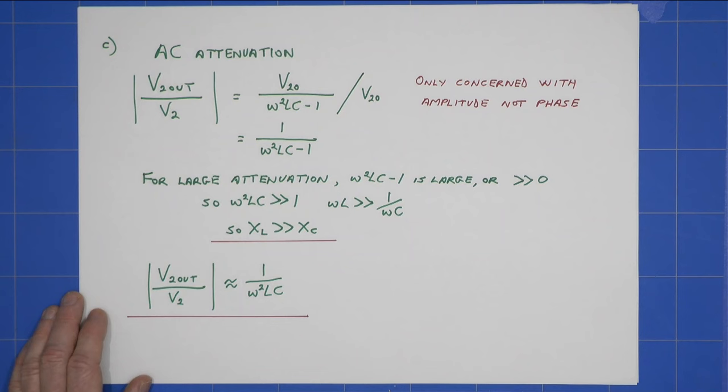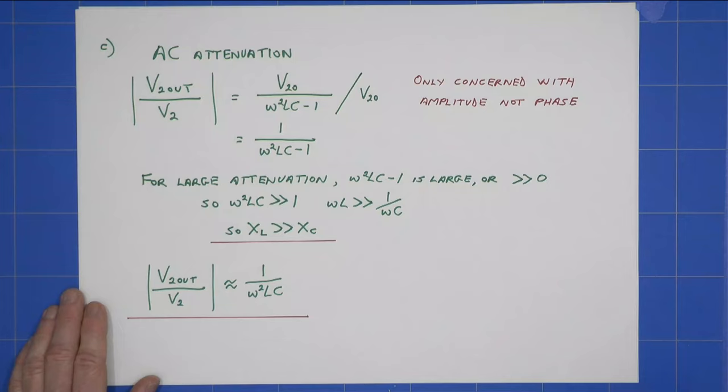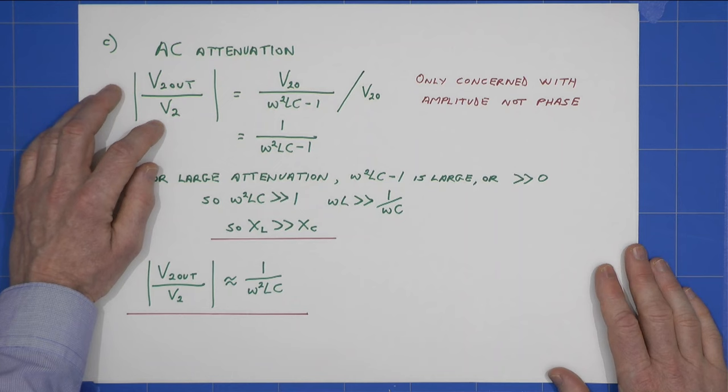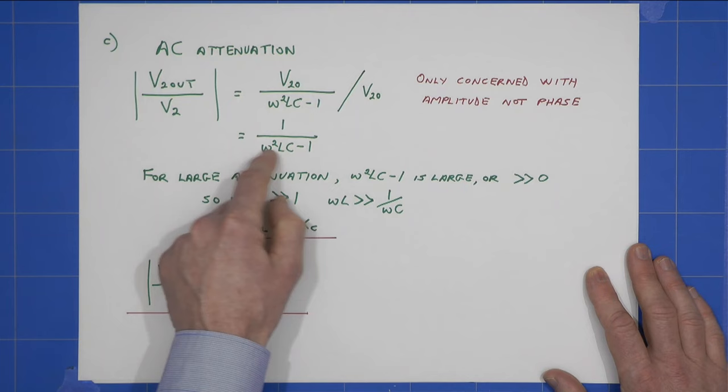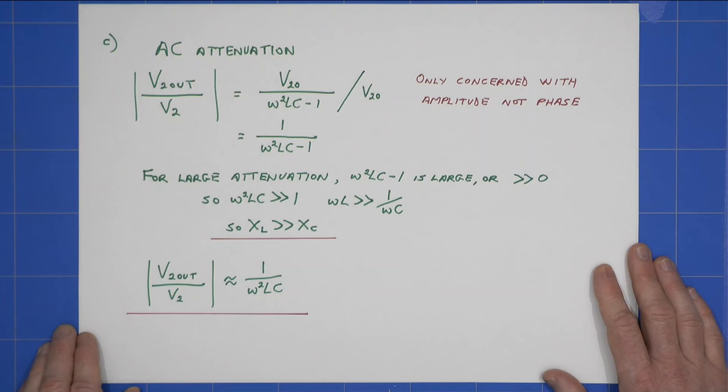And finally, the attenuation, where I'm only concerned with the amplitude, not the phase at this point. Well, V2out divided by V2 is the attenuation, which is simply this expression divided by that, which gives us that. For a large attenuation, we want this to be very large, so that this term here is very small.